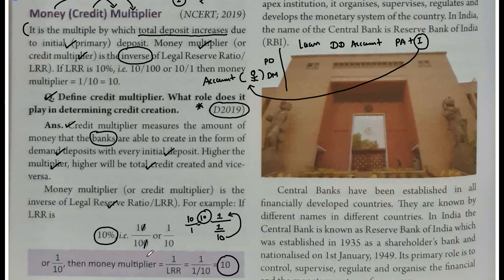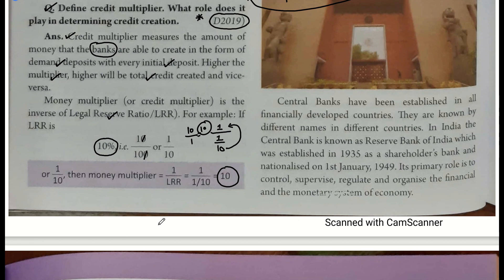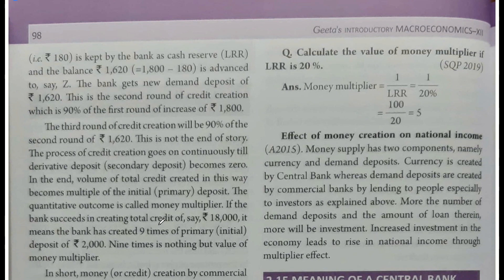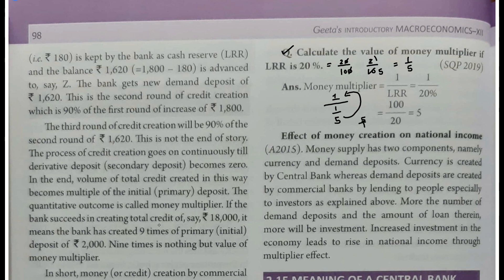Theoretical aspect ke saath practical aspect bhi samajhna zaroori hai, aur numerical bhi dekhte hain. Ek example: agar LRR 20% hai toh 20% = 20/100. Simplify karo - 1/5. Toh money multiplier = 1/LRR = 1/(1/5) = 5. Yaani ek initial deposit se bank 5 guna credit create kar sakta hai. Yahi formula hai - multiplier 1/LRR se nikalta hai, aur 5 × initial deposit = total credit creation.